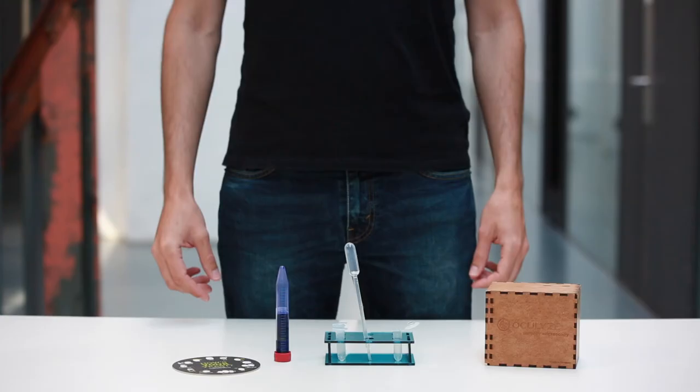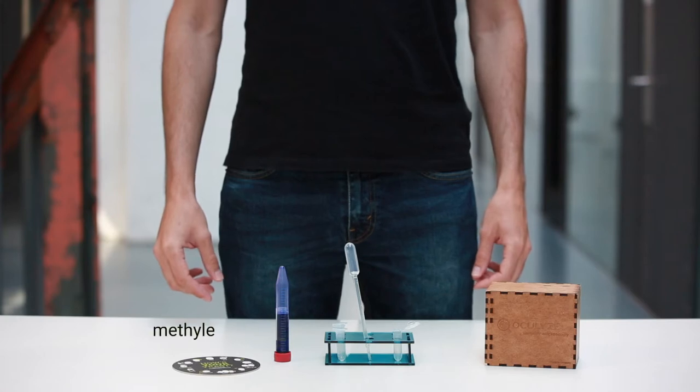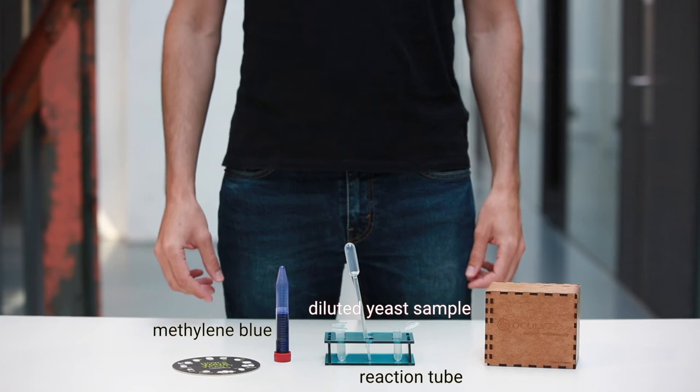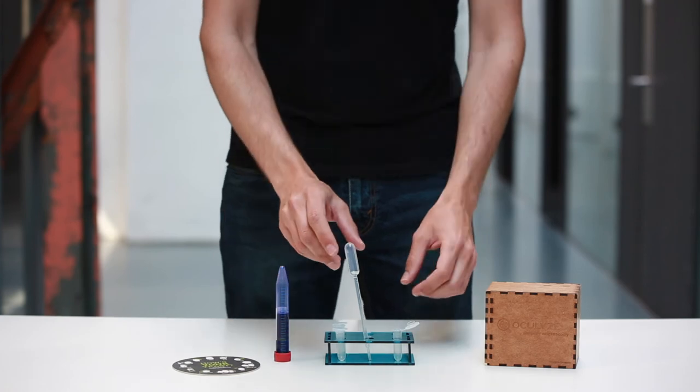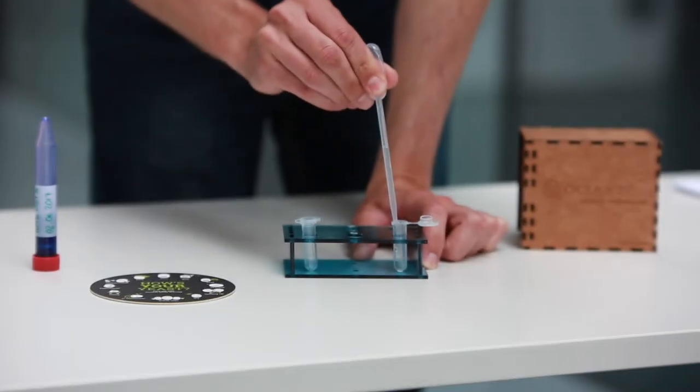In order to determine the viability of yeast, it must be stained with methylene blue. Here is what you'll need for staining. Step 1.